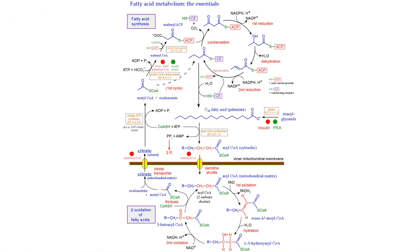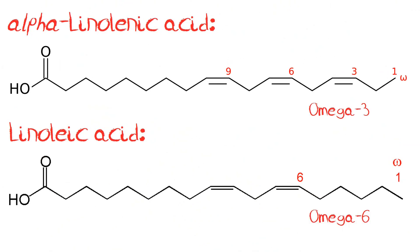Different fatty acids have different functions in the body, and we are able to synthesise or interconvert fatty acids as structural or metabolic need dictates. However, there are two fatty acids which we require but cannot synthesise or convert others into: alpha-linolenic acid, an omega-3 polyunsaturated fatty acid abbreviated as ALA, and linoleic acid, an omega-6 polyunsaturated fatty acid abbreviated as LA. That's it — there are only two fatty acids known to be essential and that we cannot live without. Omega-9 fatty acids are not essential as they can be synthesised by the body.